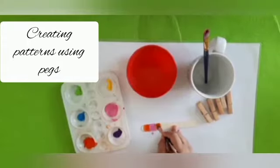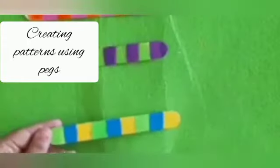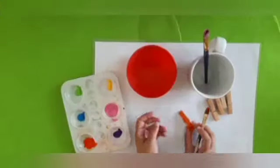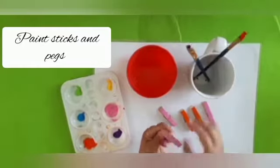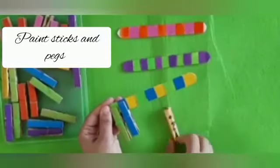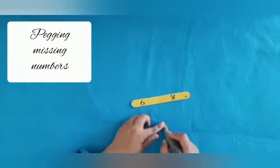Wooden pegs and sticks can be painted and used to follow and create patterns. Along with learning creativity, the pinching action between thumb and finger helps develop good finger grip.